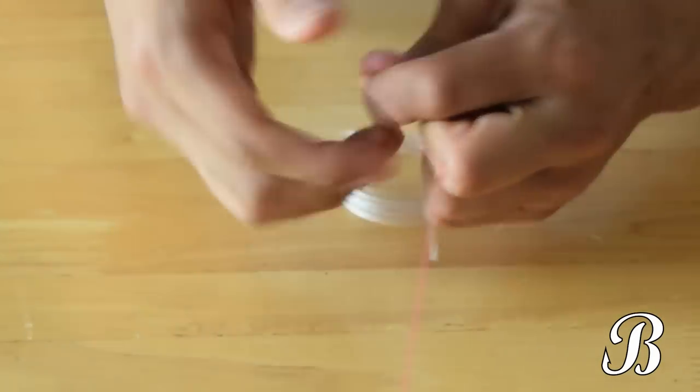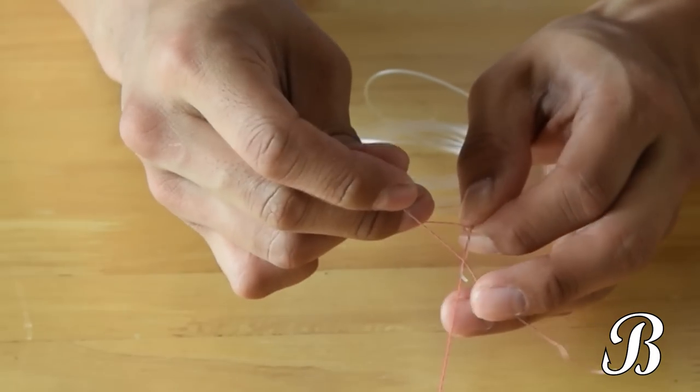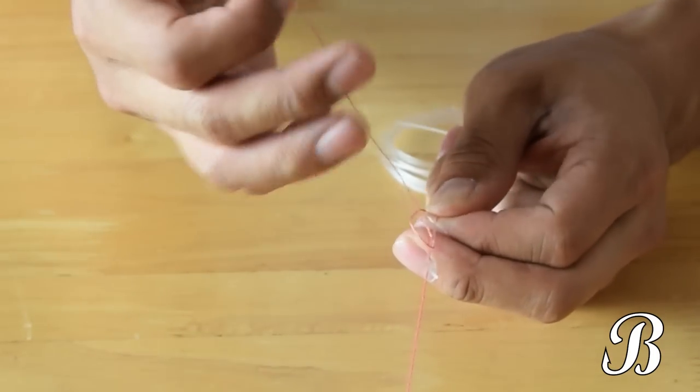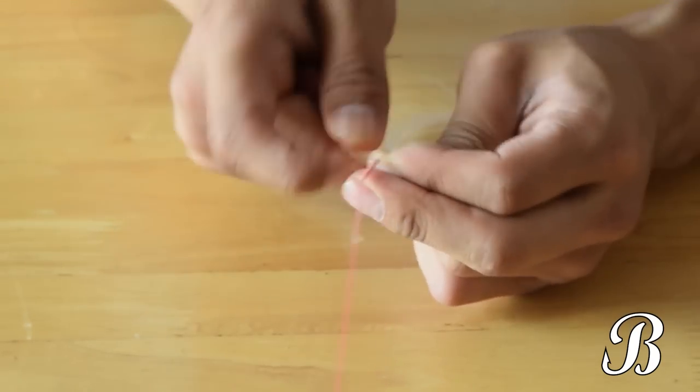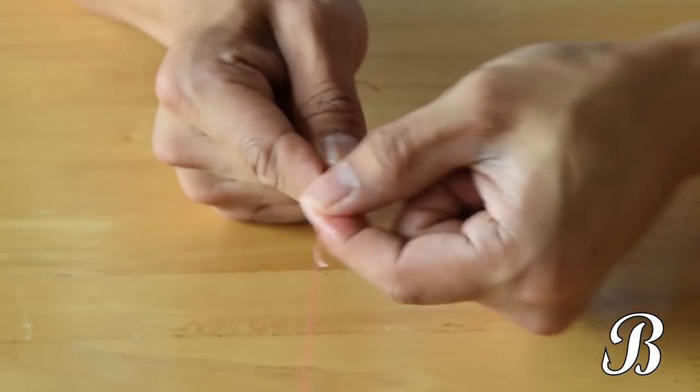Now this time we're going to make a half hitch going over. So we fold it above, put your fingers into the loop from above, pinch the tag end and pull it tight. Remember to lubricate your knot with a little bit of saliva while doing the half hitches to make sure they stay tight.